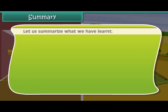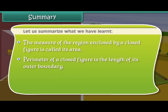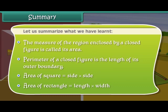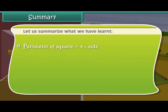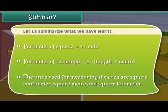Let us summarize what we have learned. The measure of the region enclosed by a closed figure is called its area. Perimeter of a closed figure is the length of its outer boundary. Area of a square is equal to side into side. Area of a rectangle is equal to length into width. Perimeter of a square is equal to 4 into side. Perimeter of a rectangle is equal to 2 into (length plus width). The units used for measuring area are square centimeter, square meter, and square kilometer.